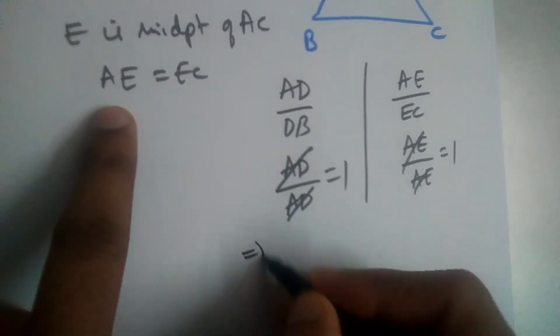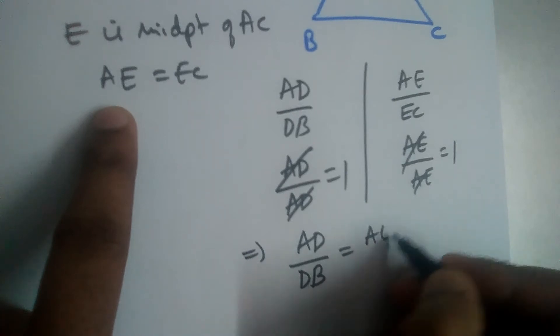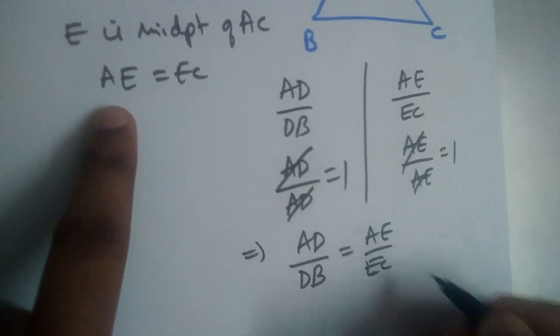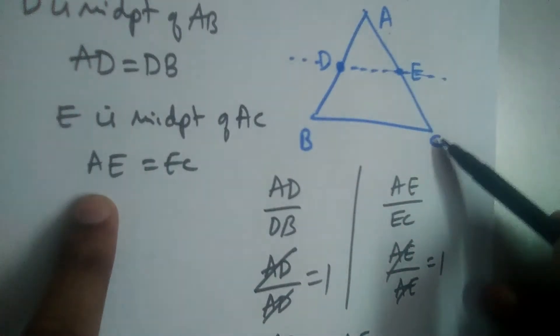So these two ratios are equal, right? So can we equate them? Yes. So AD by DB is equal to AE by EC.